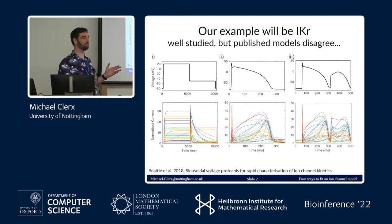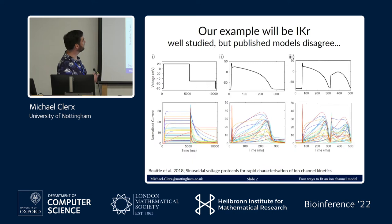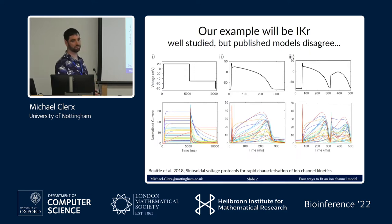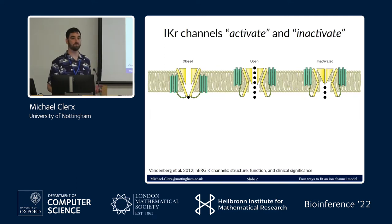Ion currents — the example we'll be using is IKR: I for current and KR because it's potassium. It's pretty well studied. Here's a bunch of different models — something like 40 different models. At the top is the input: a time series of voltage. There are quite different predictions from these models, which is one of the reasons why I'm sceptical. This is going to be our example. I'm going to tell you about the simplest possible model of IKR. We know it does two things: it opens and it closes — we call this activation.